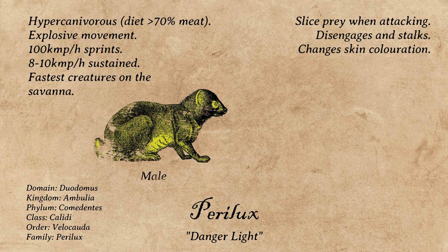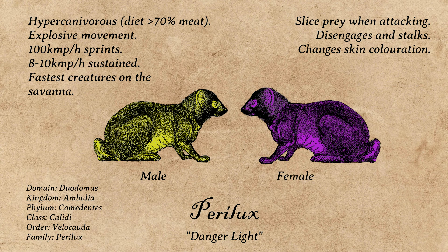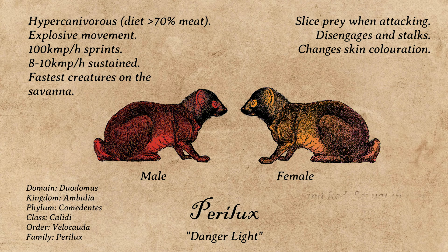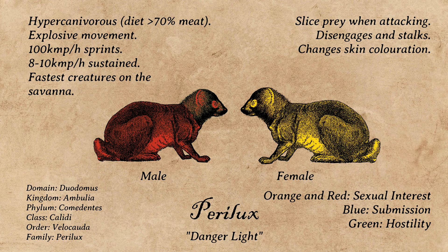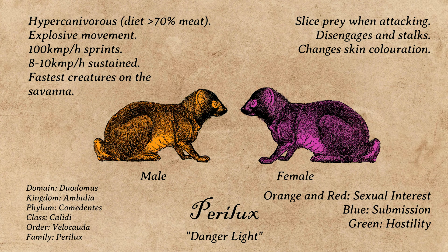Color changes are also used as a means of social and sexual signaling. When encountering other parallax, males will flash yellow, while females flash purple. From this initial interaction, a dazzling display of colorful communication will occur, with oranges and reds indicating sexual interest, blues indicating submission, and greens indicating hostility. These color displays are intricately nuanced, and parallax can be observed having in-depth visual conversations as they shift through colors, hues, and tones.